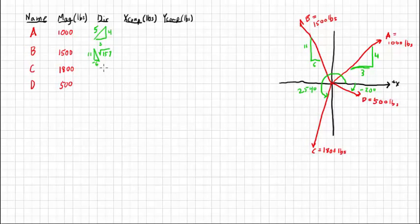So C given as 254 degrees, and D is given as negative 20 degrees.